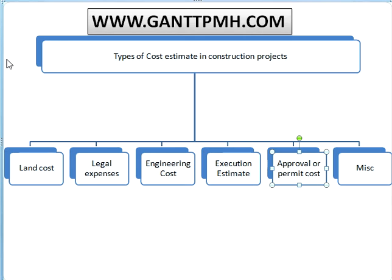For approval or permit cost — in India or in any country — we have local laws to follow before constructing any kind of infrastructure, buildings, or real estate. These approvals may be required before or after the project starts, depending on the requirement. For example, for water connections and electricity connections, we approach government agencies, submit forms, and obtain the necessary approvals.